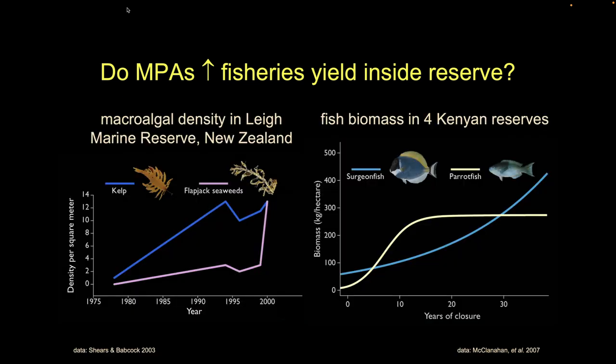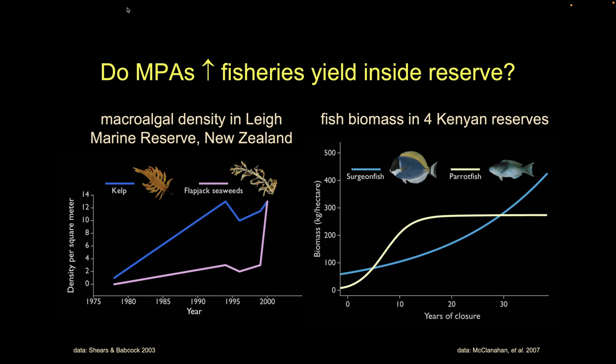Here's some data from different MPA examples. The left graph shows algae density — number of individuals per unit area attached to the bottom. The right shows fish biomass — total weight per unit area. The x-axes show time after establishment of the protected area. All of these start at a low condition and end at a higher condition.